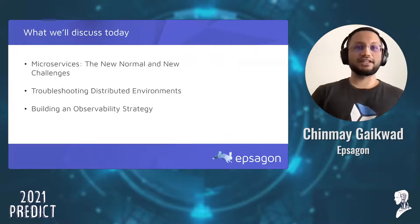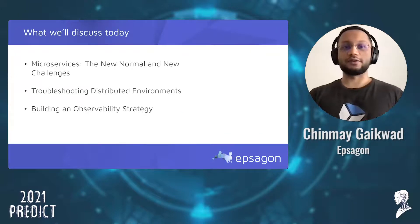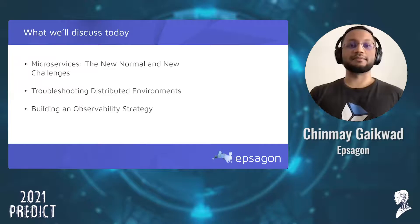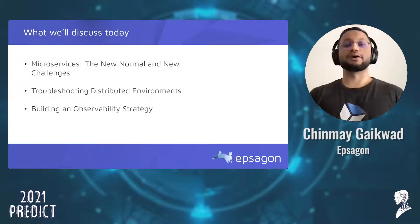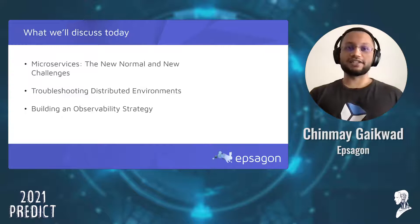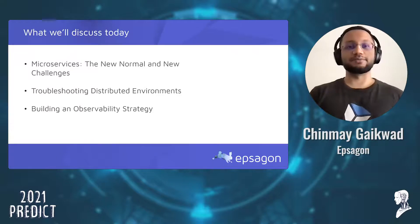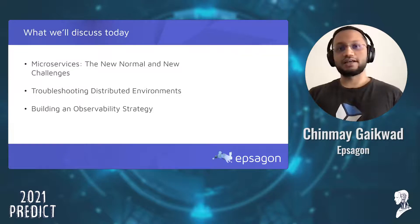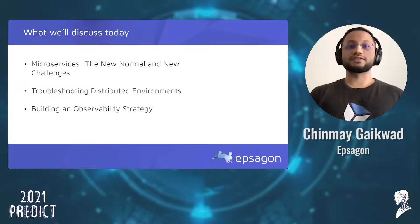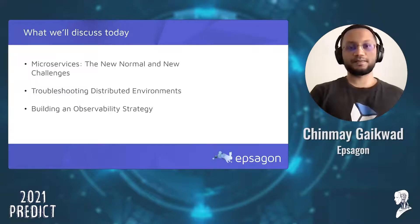Let's get into our session. We'll look at how microservices have become the new normal and what challenges have come to the forefront because of this. We will also look at how you can specifically address those challenges in achieving full observability in highly distributed architectures. Lastly, we'll discuss what a good observability solution should look like.